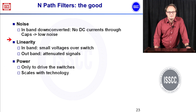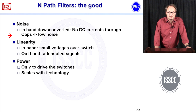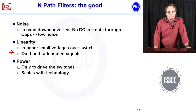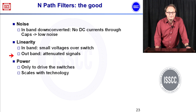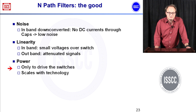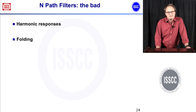What we have is an extremely high quality factor. It's completely tunable with a clock, so you can really tune it from a few hundred megahertz to a few gigahertz, and it fits into modern CMOS technology because it has only switches and capacitors. The noise is also good because in-band there are no DC currents through the capacitors, so in-band noise becomes really low — the noise factor equals the insertion loss of the filter, which is very close to zero. The linearity is also good because in-band the switches see only small voltages, and out-of-band signals are already filtered. Power is just needed to drive the switches and this scales with technology.